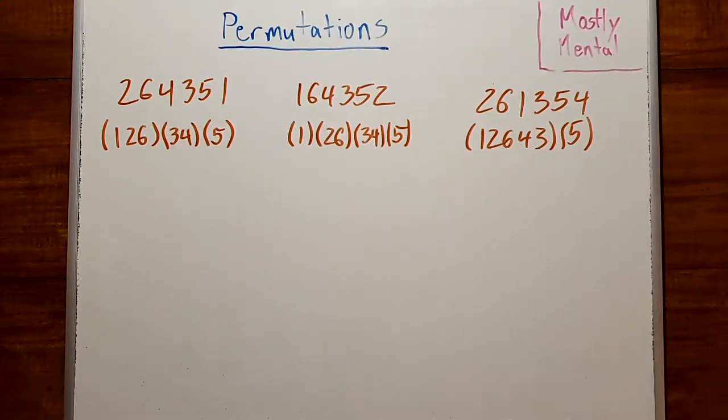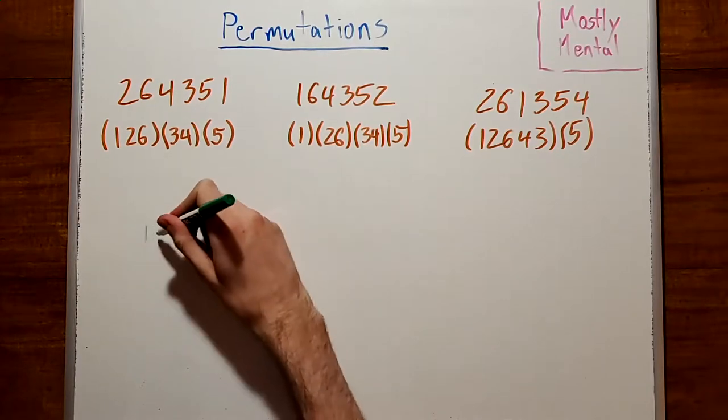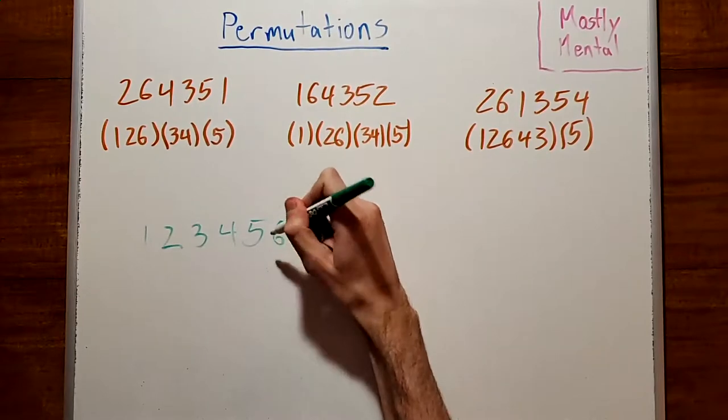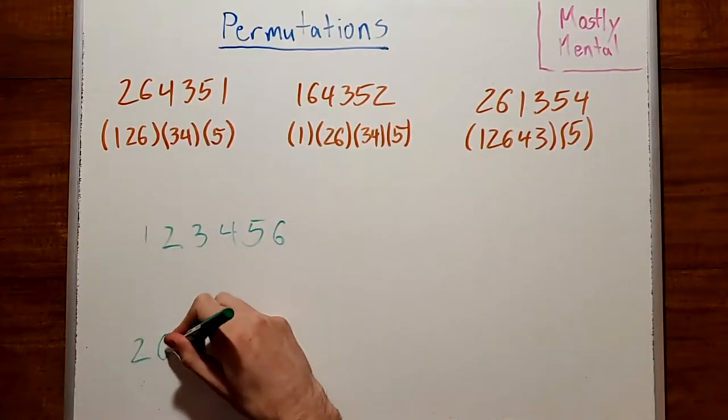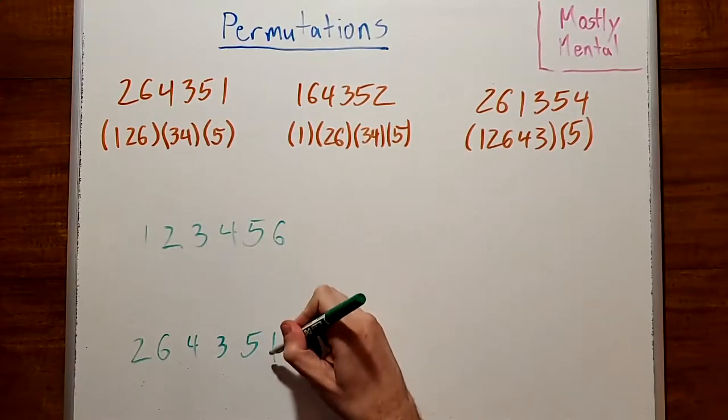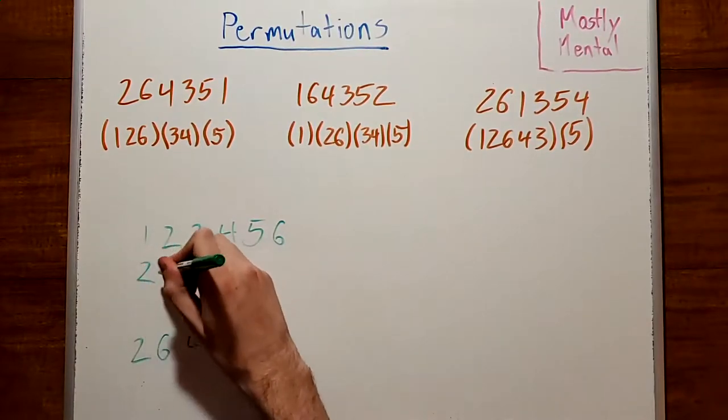So far, we've been thinking of permutations as collections of cycles, but we could also see them as sequences of swaps. So to get from 1, 2, 3, 4, 5, 6 to 2, 6, 4, 3, 5, 1, we could first swap the 1 and the 2,